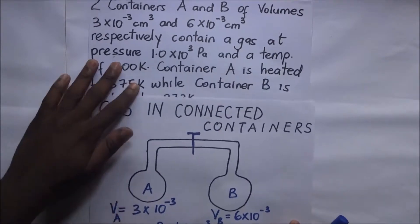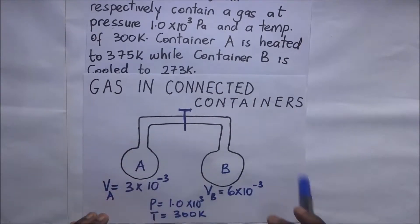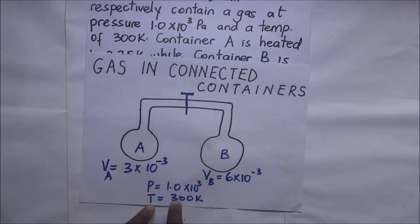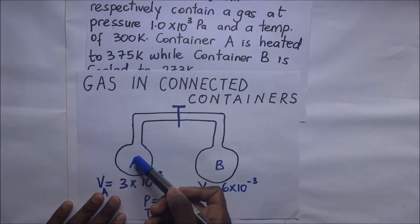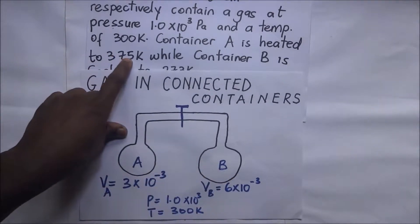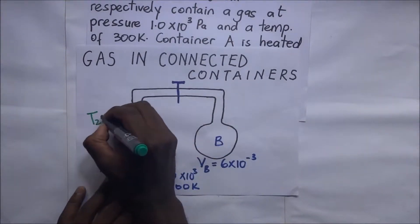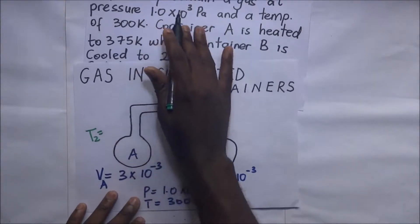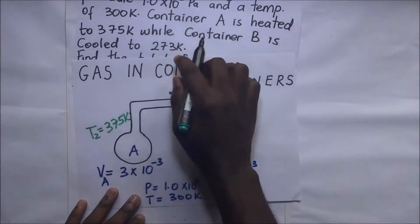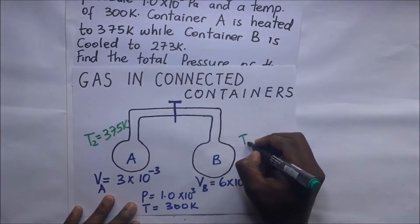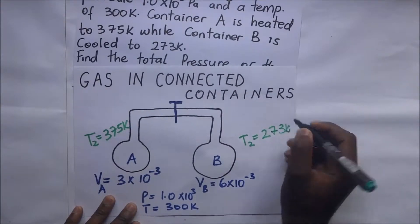The question tells us that container A is now heated to 375 kelvin, while container B is cooled to 273 kelvin. So temperature₂ for A is 375 K and temperature₂ for B is 273 K.